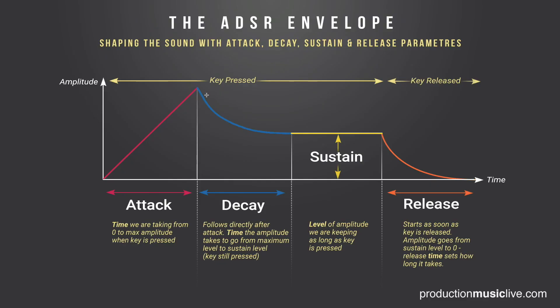Once the maximum amplitude is reached, what follows is the decay time. The decay time is another parameter, mostly in milliseconds — could be seconds as well — that takes our signal level down from maximum amplitude to the sustain level. The level we are keeping as long as we are holding the note or pressing the key. This is another time parameter, so it might be a couple of milliseconds or seconds. And then we enter sustain.